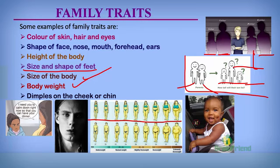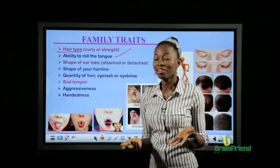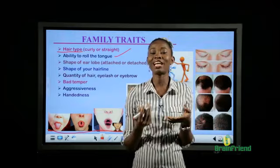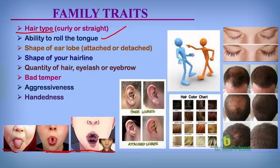Some persons also have dimples on their cheek or chin - they inherit these traits from their parents. We have the hair type as well - some persons have coily hair while some have straight hair. Some persons have the ability to roll their tongue; can you roll your tongue? Some people can roll their tongue into different shapes. I can roll my tongue a bit but not so much. This is an ability that one inherits from the parents.